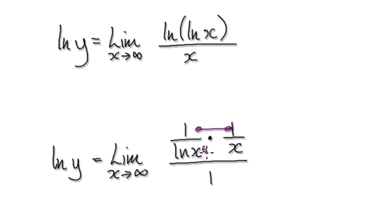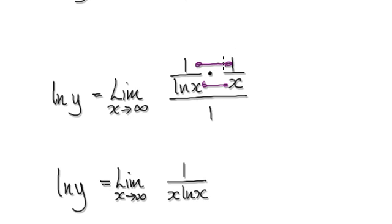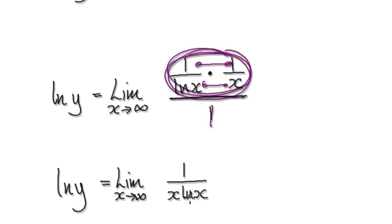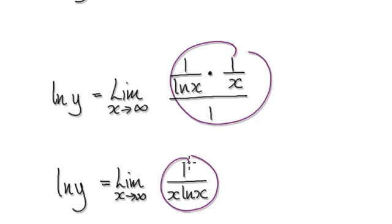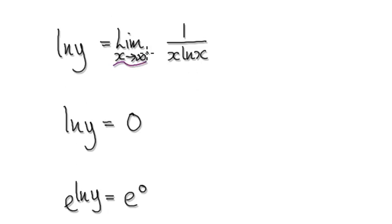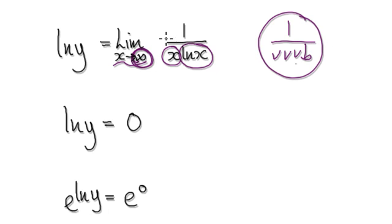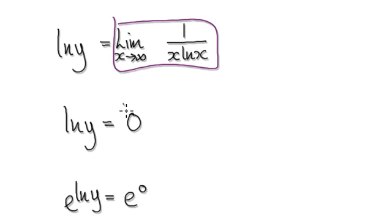Now tidy this up: top times top, bottom times bottom, giving you this expression. This thing divided by 1 simplifies further. As x tends to infinity, x is going to be very, very big, so 1 divided by something very, very big is going to head towards 0. The limit will be 0.